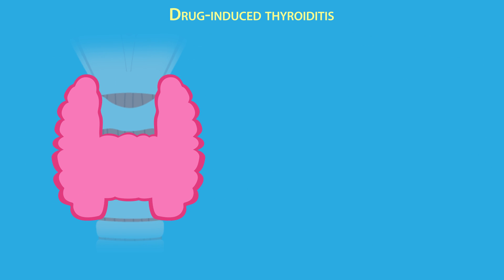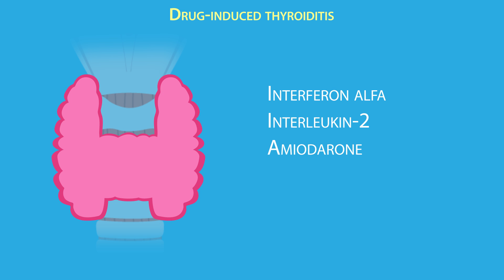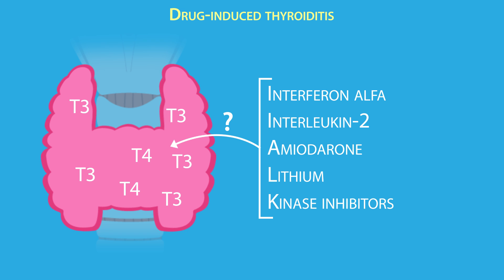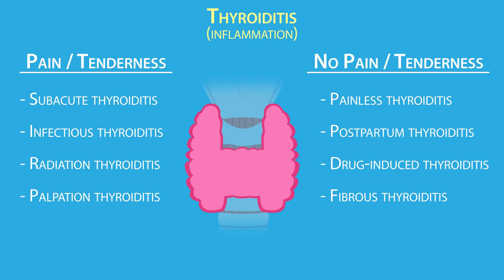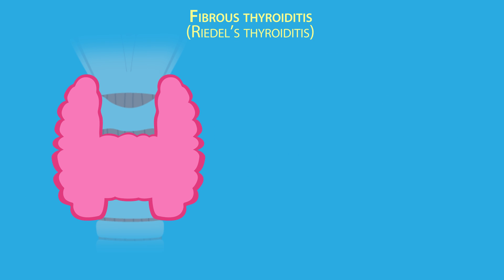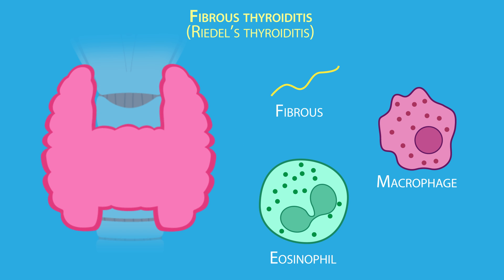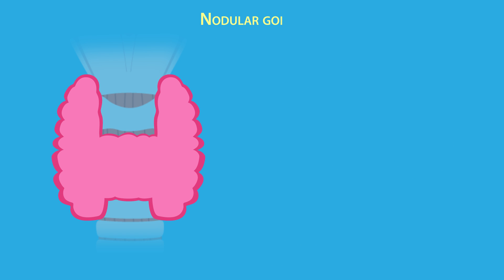Drug-induced thyroiditis can result from interferon alpha, interleukin-2, the antiarrhythmic amiodarone, lithium, and kinase inhibitors. How these drugs cause hyperthyroidism is not completely understood, but patients predisposed to hyperthyroidism should be monitored closely, and serum TSH levels must be within normal range before beginning therapy. Fibrous thyroiditis, or Riedel's thyroiditis, is characterized by fibrous and macrophage or eosinophil infiltration of the thyroid gland and adjacent tissues, and can lead to neck tightness and a hard fixed goiter.